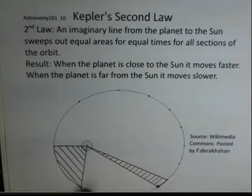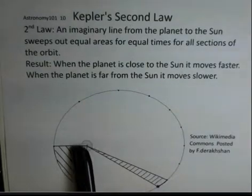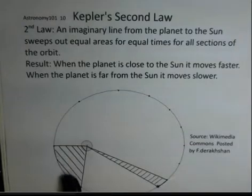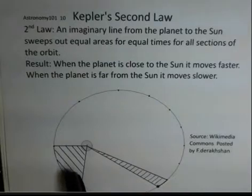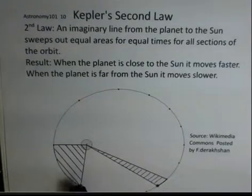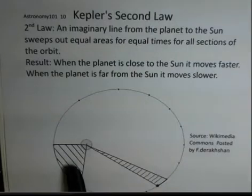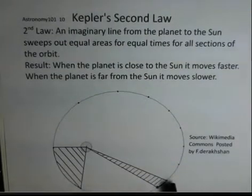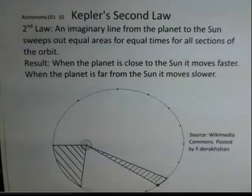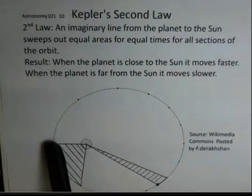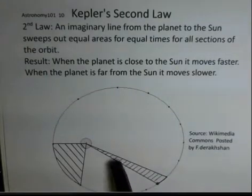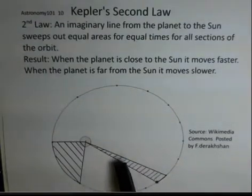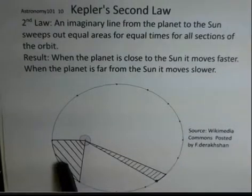If we would take an imaginary line from the planet to the sun, and at some later time from the planet to the sun, then the area of this portion of the ellipse that was swept out by this moving imaginary line, that area is going to be the same as long as we use the same time interval. So if this is one month between this dot and this dot, and one month between this dot and this dot, the area that I've shaded here will be equal to the area back here.